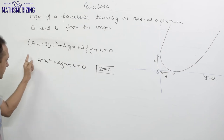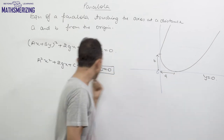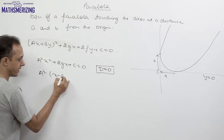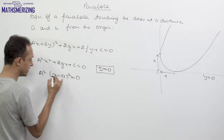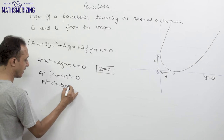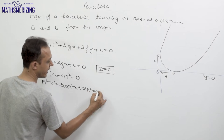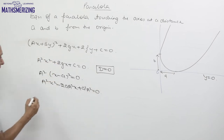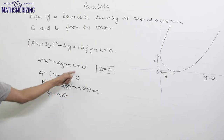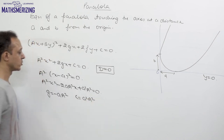We also know it's a quadratic equation with a double root at (a, 0). That means this quadratic equation should be in the form a²(x − a)² = 0. Expanding: a²x² − 2a·a²·x + a²·a² = 0. Comparing coefficients, we get g = −a·a² and c = a²·a².